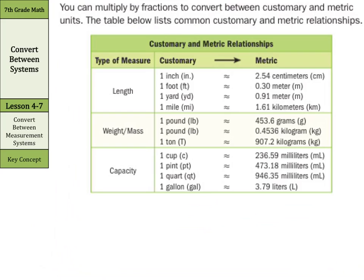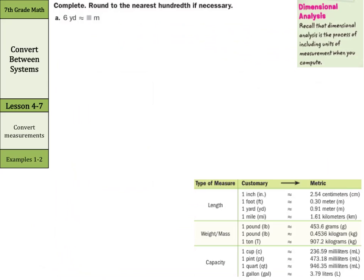Anyways, let's continue on. You can multiply by fractions to convert between customary and metric units. The table below lists common customary and metric relationships. And this is a table we will use throughout this lesson. We have our types of measure, which is our length. And we're given customary to metric. So, our inches to centimeters, our feet to meters, and so on. I'm not going to read the whole table now because we're going to use this throughout the lesson.